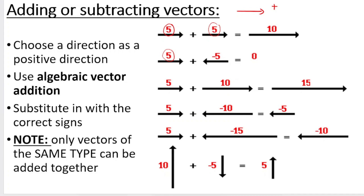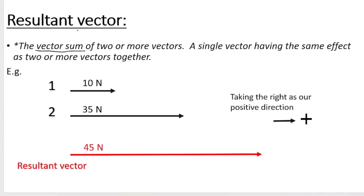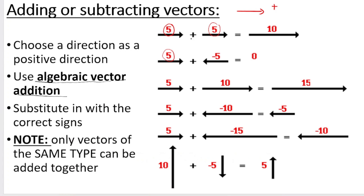This is called adding or subtracting vectors in order to find the net or resultant vector. We always need to choose a positive direction, and when you answer this in your test, indicate that positive direction at the top of your page. We use algebraic vector addition — it's always the vector sum. That takes us back to our definition of a resultant vector: it's the vector sum of two or more vectors added together. So in all examples, we have a plus sign. We always write vector one plus vector two, force one plus force two. Then substitute in with the correct signs.